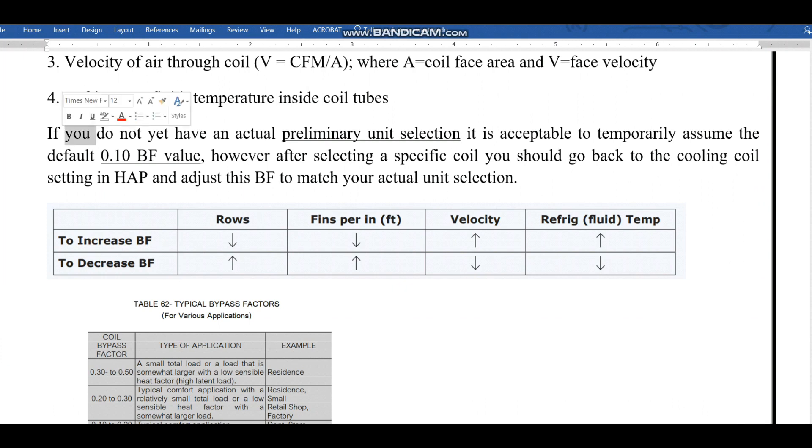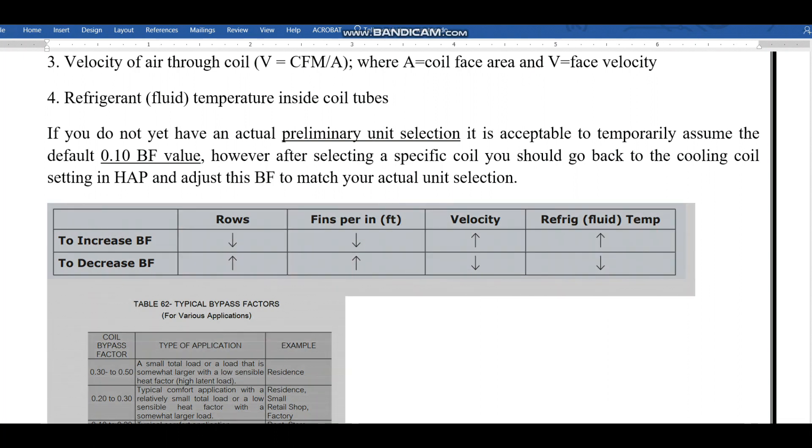Normally what we are doing in the project: if you don't yet have an actual preliminary unit selection at the starting stage of the project, then it is acceptable to temporarily assume the default 0.1, that means 10 percent, as a bypass factor value. However, after selecting the specific coil, you should go back to the cooling coil setting in HAP and adjust the bypass factor to match your actual unit selection.